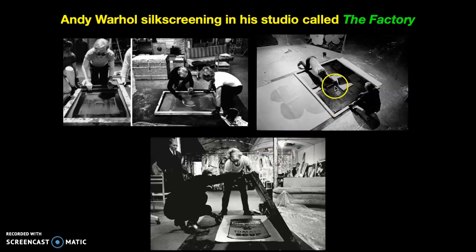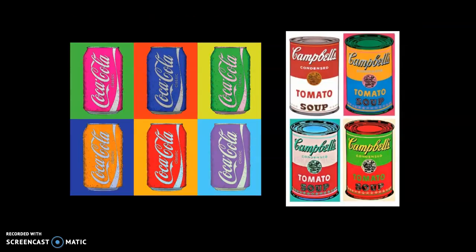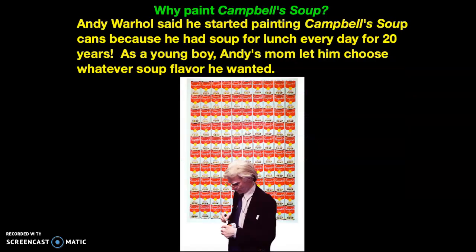He squeeges out the paint, and when he lifts up the screen you can see the soup can — it looks very accurate and very mass-produced. If you have a t-shirt with a logo on it, that is often a silk screening process — you can silk screen clothing for logos or sports teams. Andy Warhol was so interested in Campbell's soup because he had soup for lunch every day for 20 years, and as a young boy his mom let him choose whatever Campbell's soup flavor he wanted.